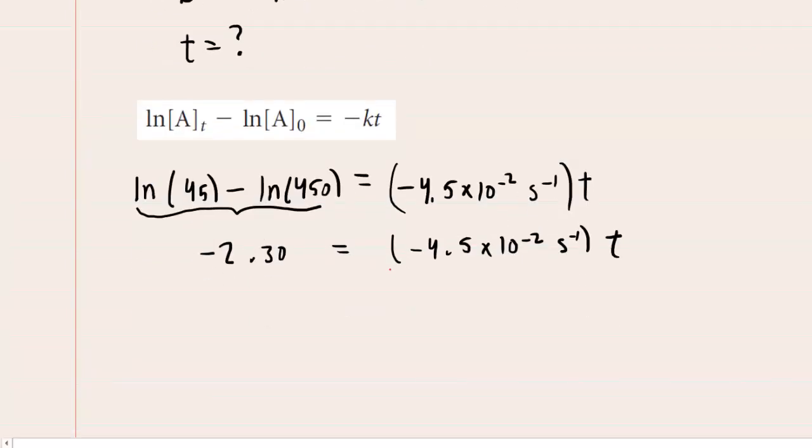Of course, that will cancel it out on the right-hand side of the equation. When you divide, make sure that you put this quantity in parentheses, the negative 4.5 times 10 to the negative 2.